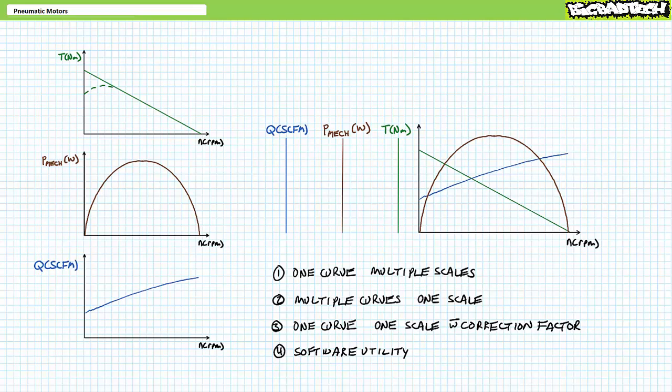Method one uses one curve and multiple scales. Method two uses one scale and multiple curves. Method three uses one curve, one scale, and a correction factor table. And lastly, method four uses the internet or manufacturer computer application.